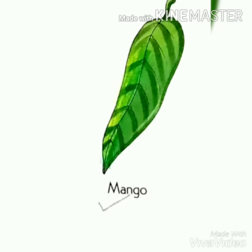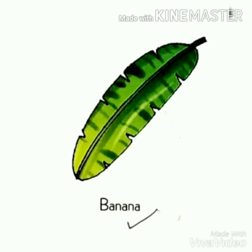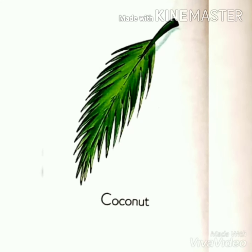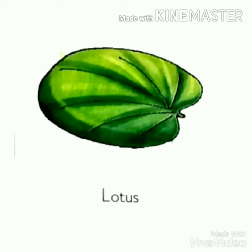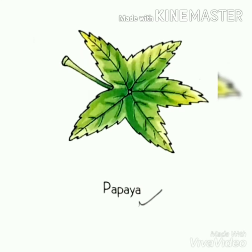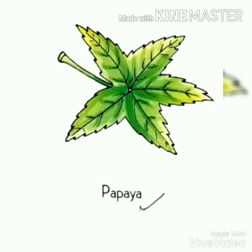This is mango leaf. This is banana leaf. This is coconut leaf. This is lotus leaf. This is papaya leaf. You can learn the names of any five leaves.